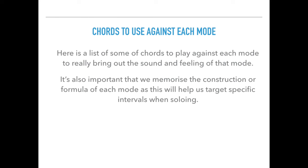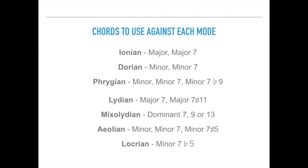Here is a list of some of the chords to play against each mode to really bring out the sound and feeling of that mode. It's important that we memorize the construction or formula of each mode, as this will help us to target specific intervals when soloing. Ionian: major or major 7. Dorian: minor or minor 7. Phrygian: minor, minor 7, or minor 7 flat 9 if you want to sound particularly Phrygian. Lydian: major 7, or more specifically major 7 sharp 11. Mixolydian: dominant chord — dominant 7, dominant 9 or 13. Aeolian: minor, minor 7, or minor 7 sharp 5. Locrian: minor 7 flat 5.